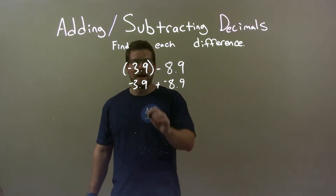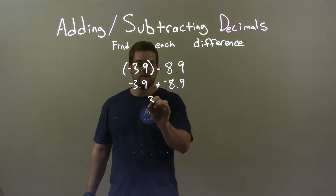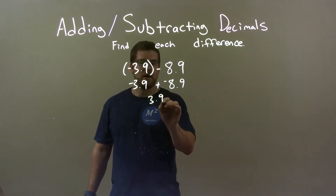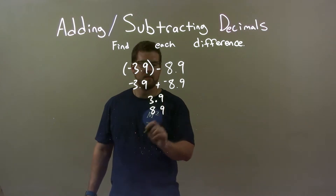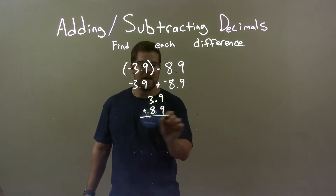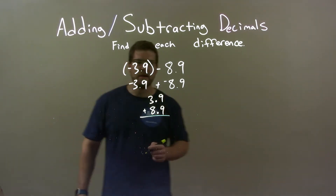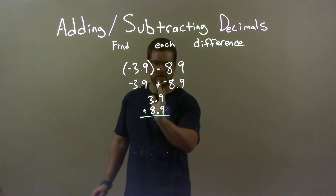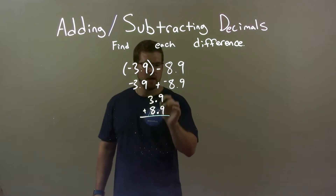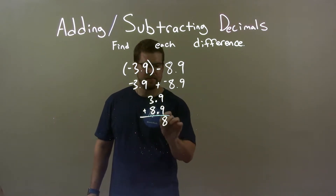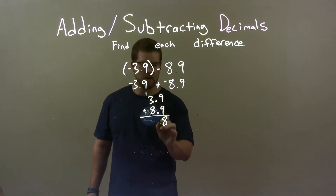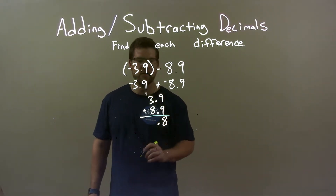So let's add these two together, and we know we have to put on a negative at the end. 3.9 and 8.9 — let's add them. Make sure the decimals are lined up; that's very important. 9 plus 9 is 18. We write 8 and carry the 1. The decimal place comes down here.